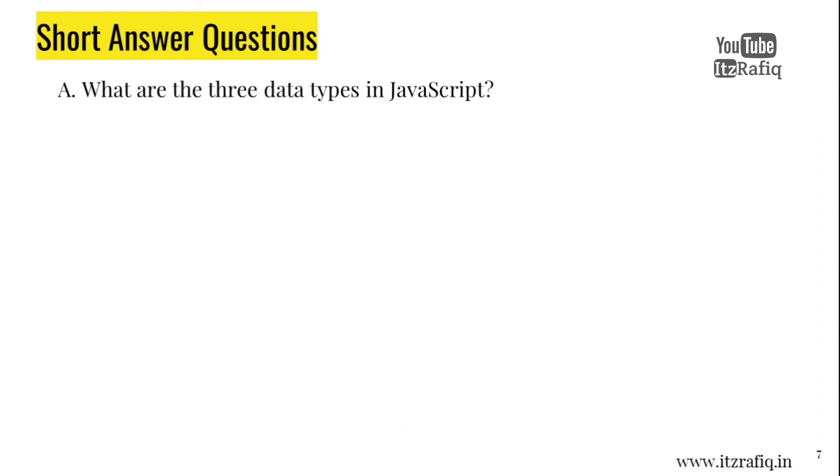A. What are the three types of data in JavaScript? Three types of data in JavaScript are: String, for example, hello. Number, for example, 1, 45, 12.6. Boolean.